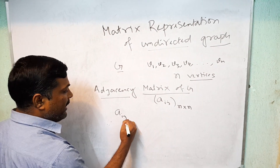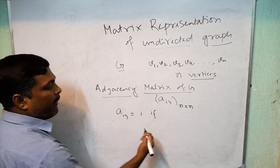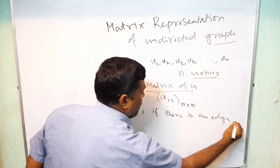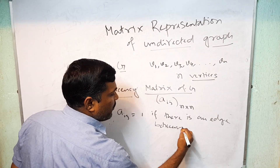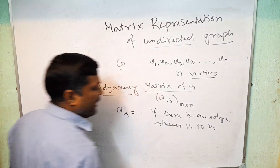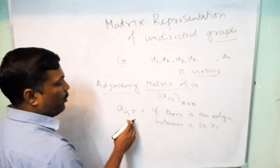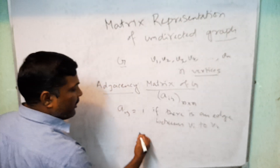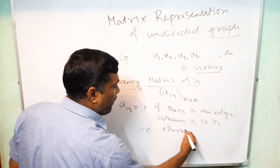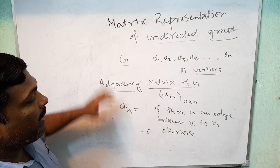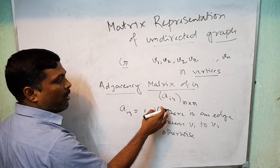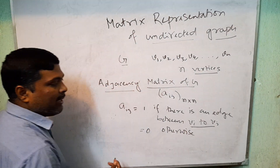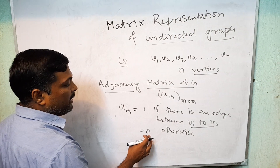Suppose this is Aij (n×n). What is Aij? Aij equals 1 if there is an edge between Vi and Vj. So the ith row, jth column element is 1 if there is an edge between Vi and Vj, and 0 otherwise.